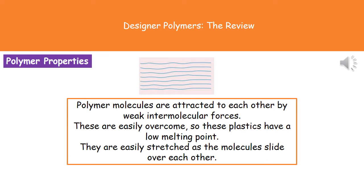If we consider why polymers have different properties, we're looking at how they're attracted and linked. In the diagram, the different polymer molecules look like they're just sitting on top of each other. Each polymer molecule is attracted to the others by weak intermolecular forces. Because these are weak, they're very easily overcome, so we don't need to put much heat in to overcome those forces — as a result, they have a low melting point.